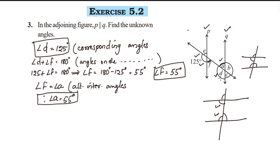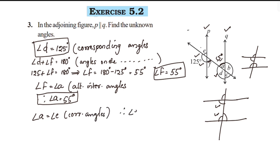Now, what are we going to do with angle E, angle B, and angle C? Angle A is 55 degrees. Angle A and angle E are corresponding angles. Corresponding angles are equal, so angle A is equal to angle E. Therefore, angle E is equal to 55 degrees.